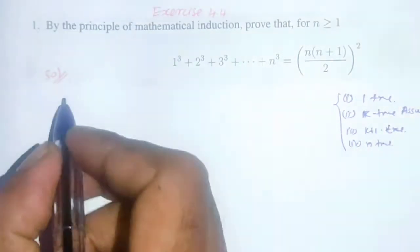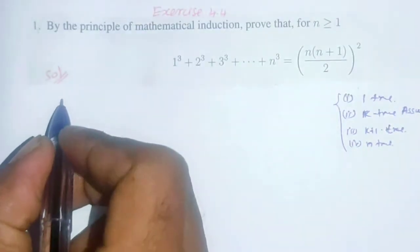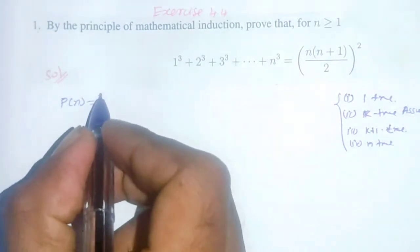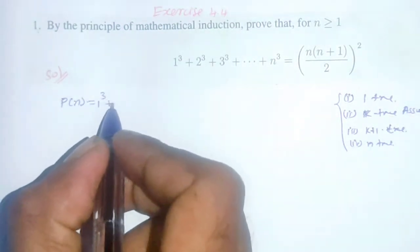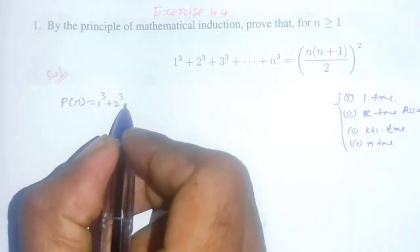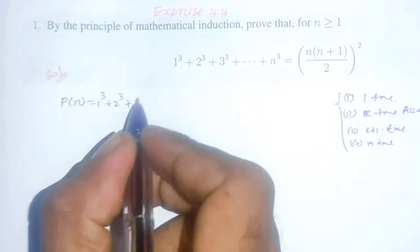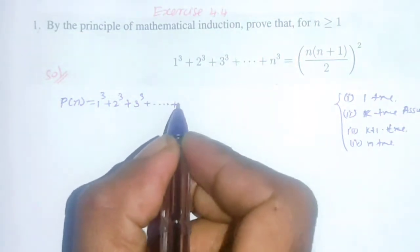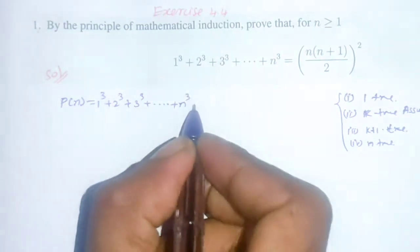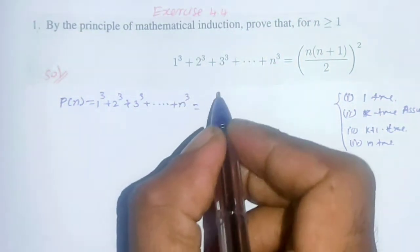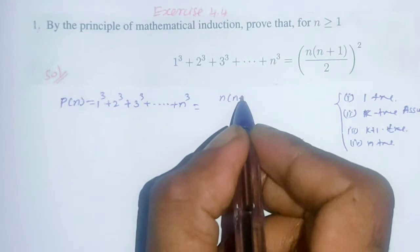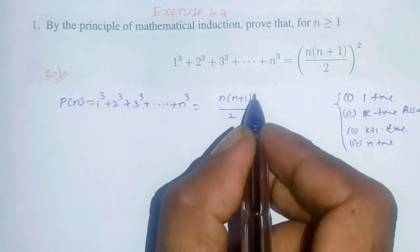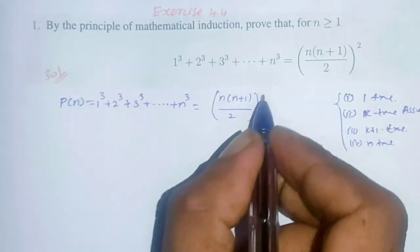The first condition is P(n): 1³ + 2³ + 3³ + ... + n³ = [n(n+1)/2]², the whole square.